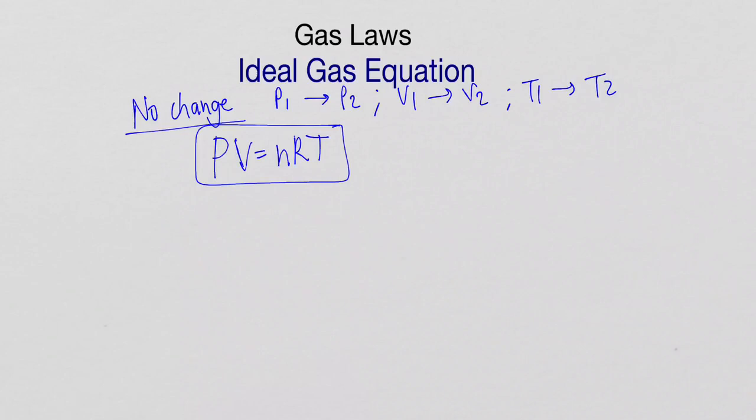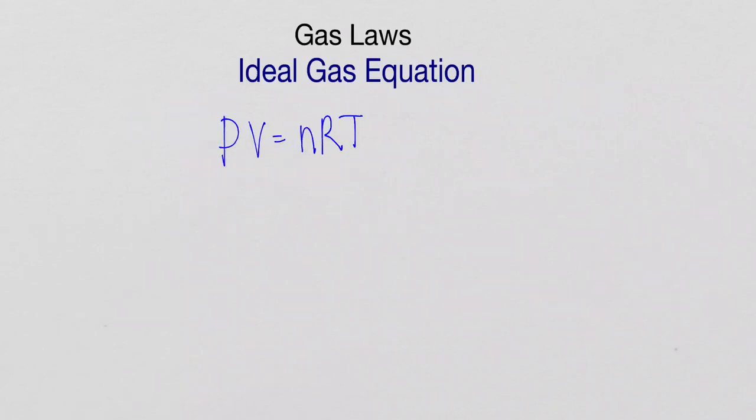Over here, our units are very important. With the units, we now no longer can choose. Pressure needs to be in Pascal. It cannot be in kilopascal. Volume needs to be in meter cube. It can't be in centimeter cube or in decimeter cube. Your n is your number of mole. R is your universal gas constant, 8.314. Remember, your constant will always be given, and always use it exactly as it is rounded on your information sheet. And then T is the temperature which must be in Kelvin.